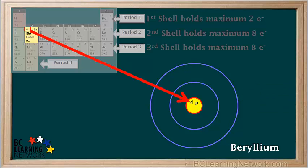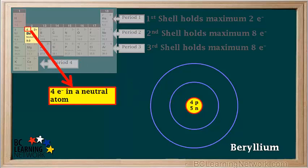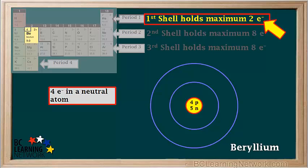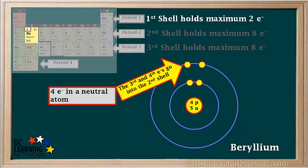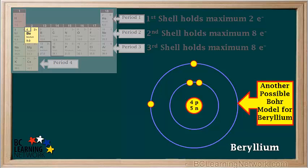Beryllium has four protons, and 9 minus 4 equals 5 neutrons in its most common form. Beryllium has four electrons in a neutral atom: the first two go into the first shell, and the third and fourth electrons go into the second shell. One possible Bohr model shows the two electrons in the second shell as an electron pair. Another shows them as single electrons at 90 degrees to each other. Yet another shows them 180 degrees from each other. All three possible models for beryllium can be considered correct.